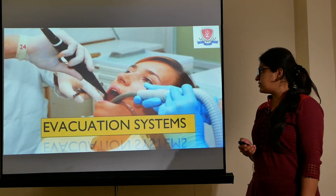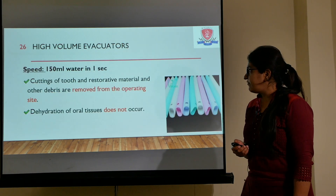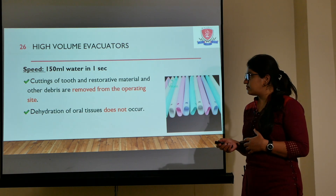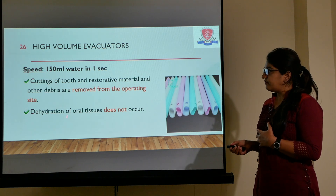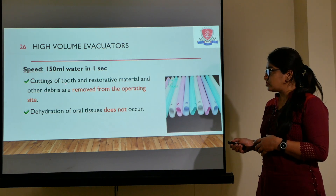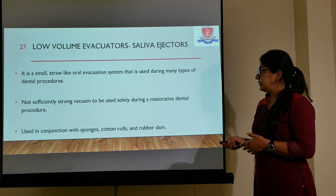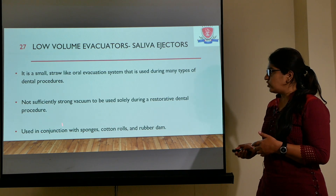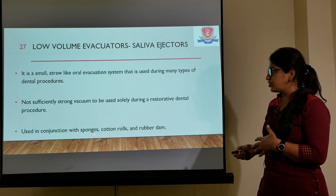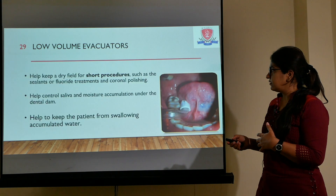Coming to the evacuation systems, there are mainly two types: the high and the low vacuum evacuation systems. The high evacuation systems are used during restorative procedures because they remove water, tooth cuttings, and restorative material, and they do not cause dehydration. They work at a speed of 150 ml of water per second. The low volume evacuators or saliva ejectors are not sufficiently strong alone — they must be used in conjunction with sponges, cotton rolls, or rubber dam, and are mainly used for short procedures.